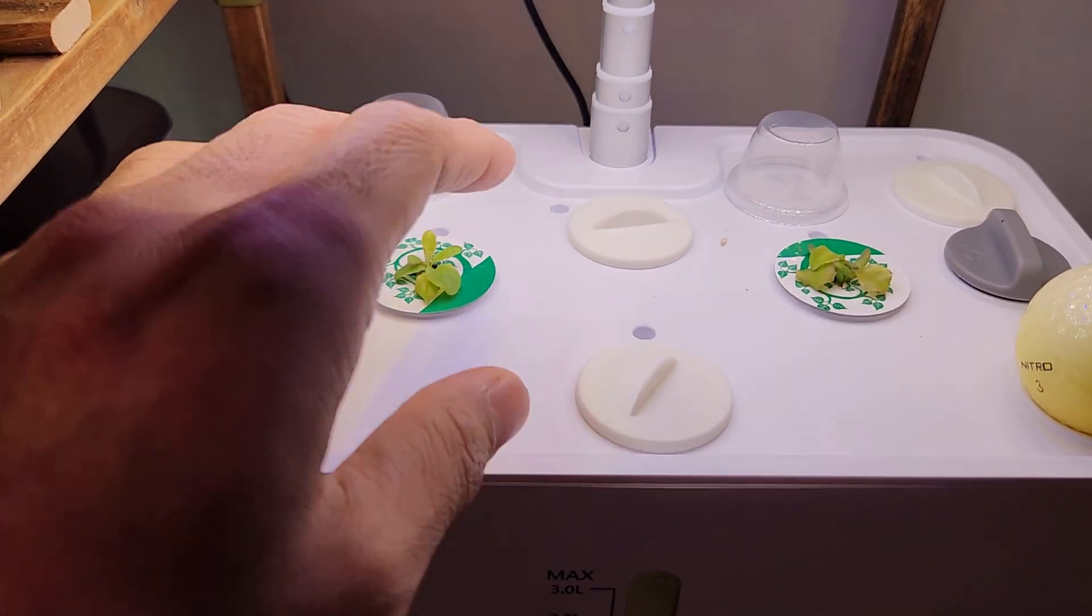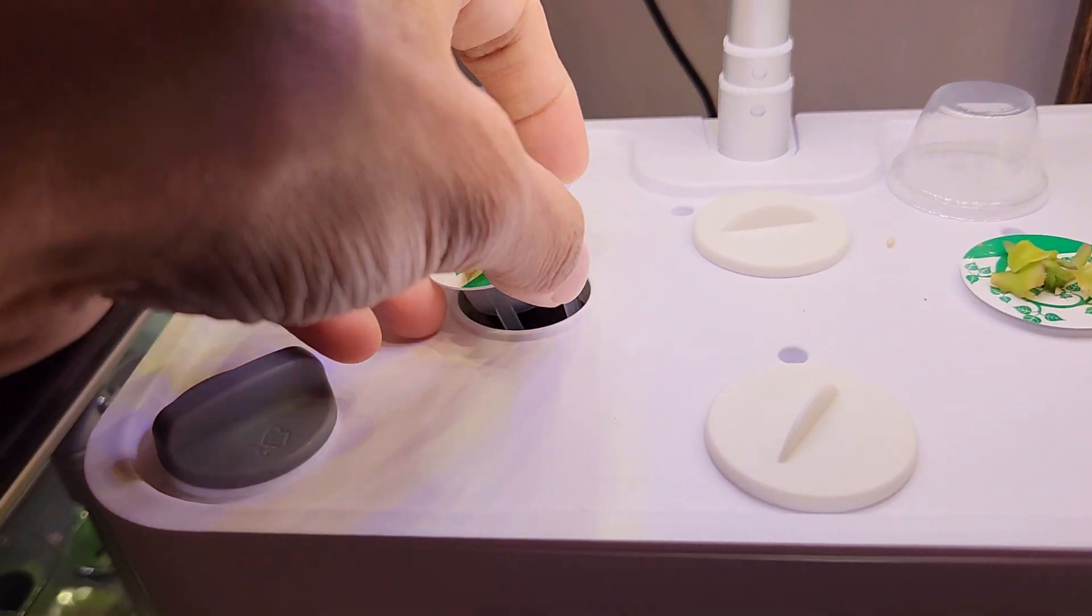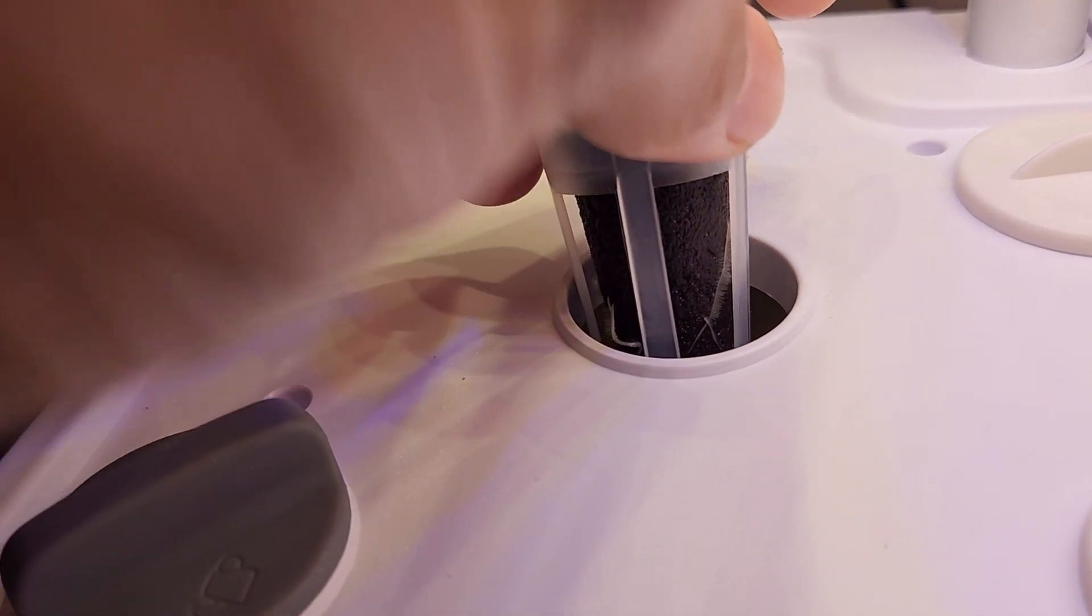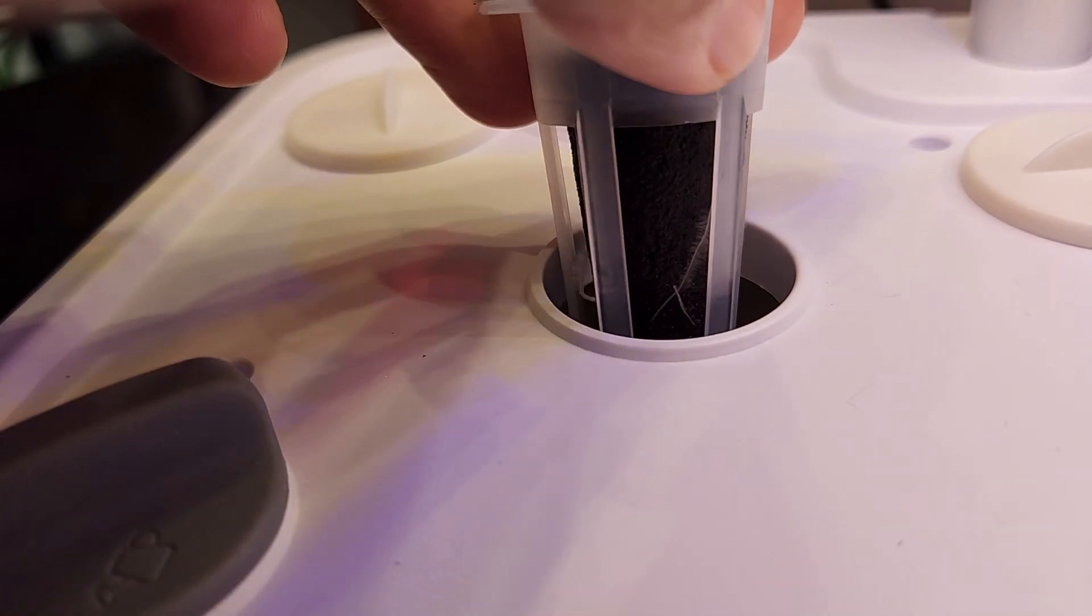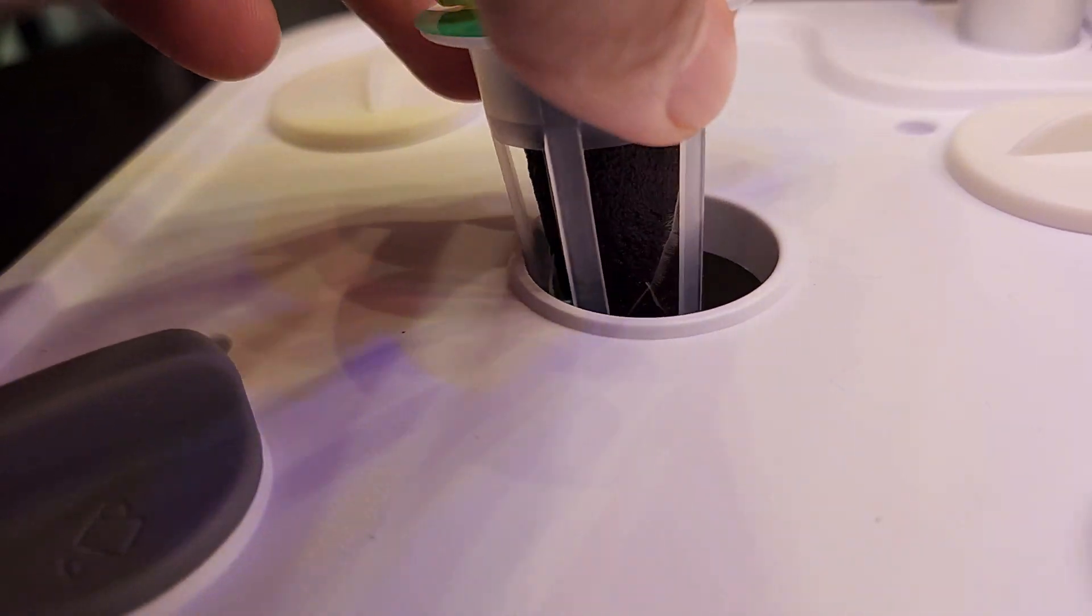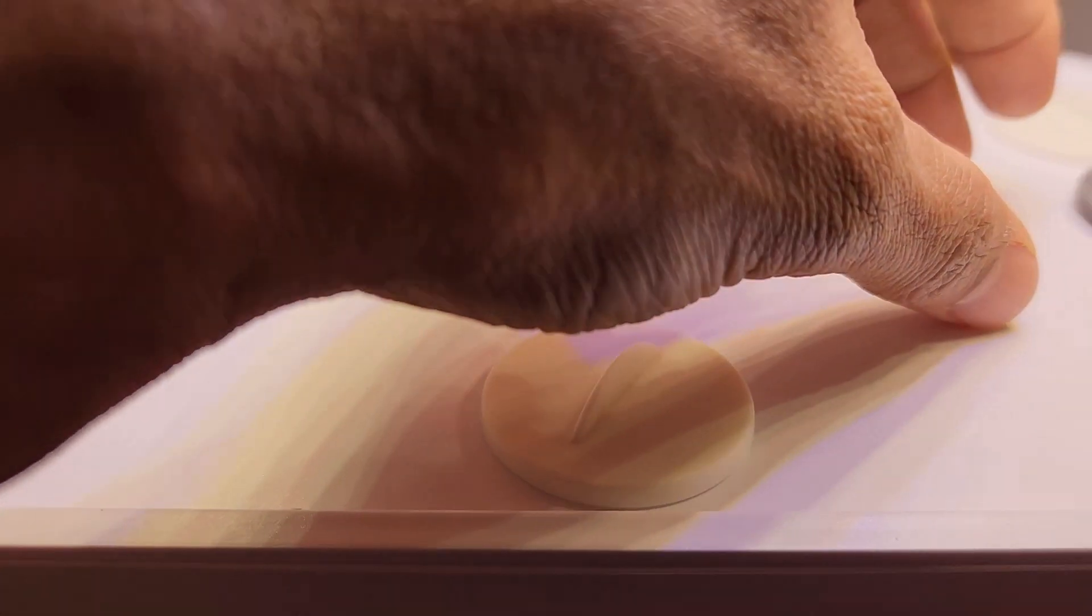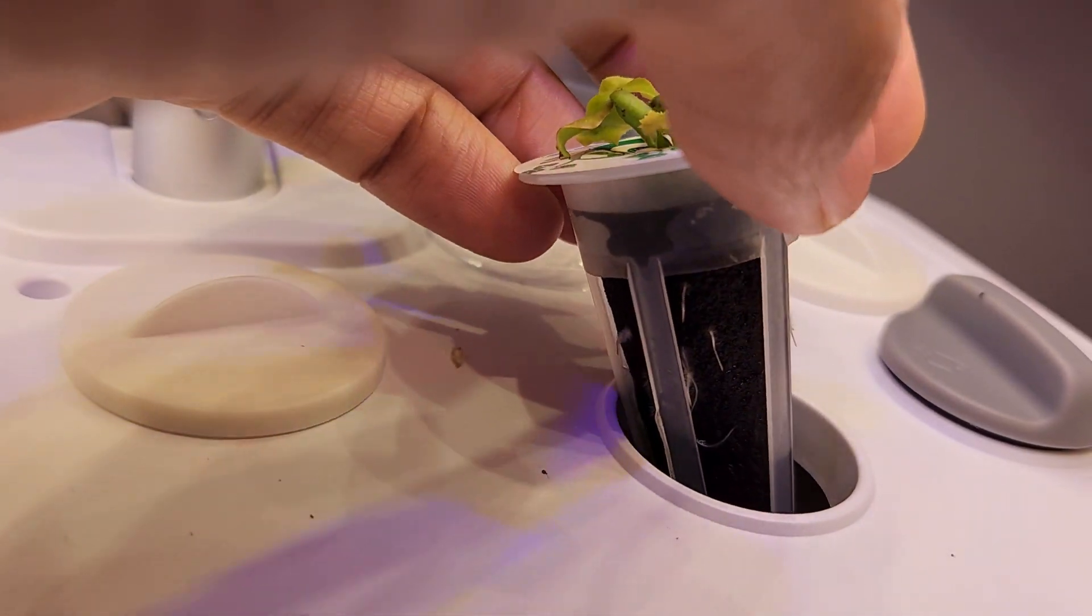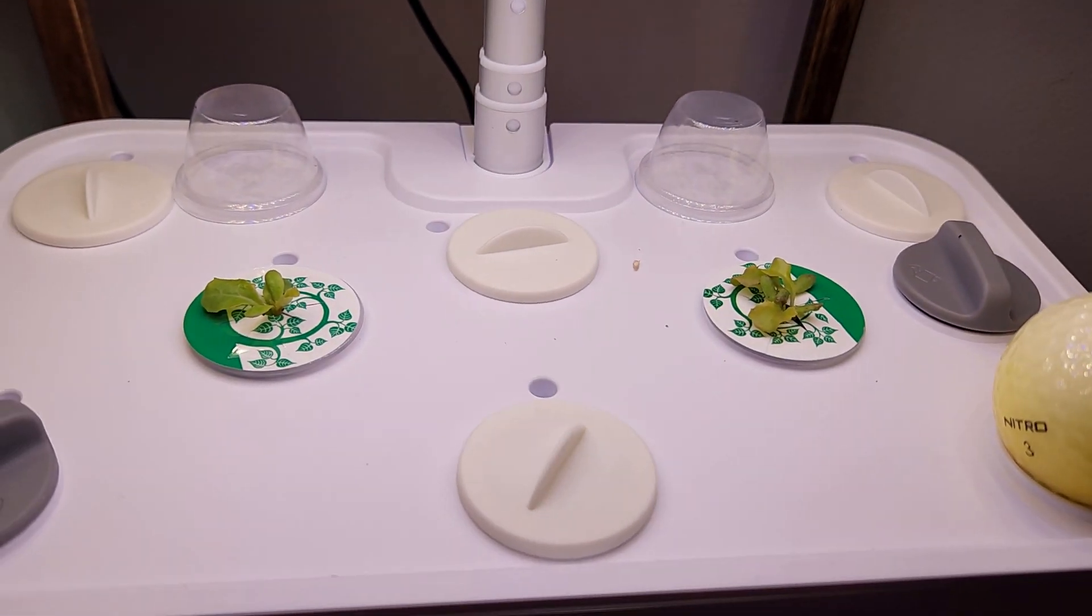I used the same sponges in this garden as well. And this is also lettuce variety. Look at the roots. They're coming through the sponges very nice. So these sponges are working very well. Look at all these roots. Wow. Yeah, these sponges are working very well.